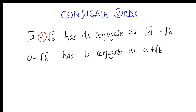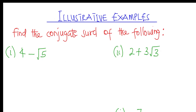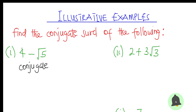For example one, find the conjugate surd of the following. The first one is 4 − √5. The conjugate of 4 − √5 is found by changing the sign in between 4 and √5 to its opposite. So here we are going to have 4 + √5, and that is the conjugate of this.